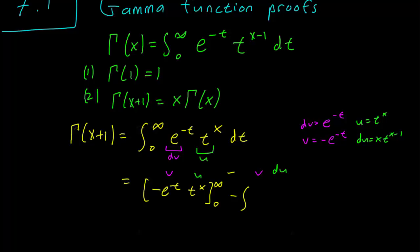And this second term is an integral, minus e to the minus t, du is going to be x times t to the x minus 1, and this integral taken dt from infinity to 0.